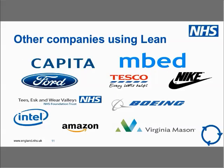Other companies using Lean include virtually any company doing well — nearly all car manufacturers use it. Some NHS trusts, such as Tees, Esk and Wear Valleys, and Wye Valley, are really strong on this and have implemented it using the Virginia Mason technique. Toyota is happy to share this methodology because the second key point is that Lean is about 90% culture and only 10% about the actual tools. Toyota knows you can't catch them — they're 70 to 80 years into their journey.